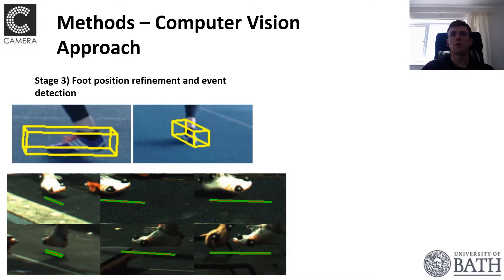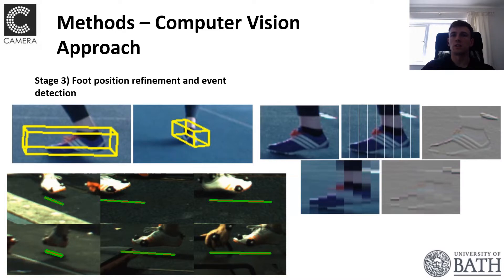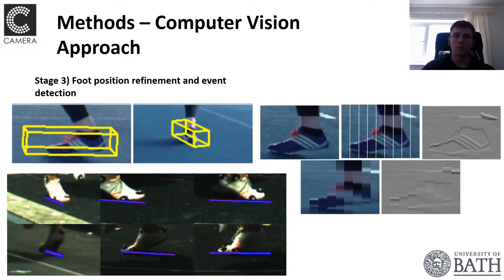3D foot localization refinement is achieved by optimizing a roughly foot-sized 3D bounding box around the foot and projecting this from 3D space back into each 2D camera view to provide multiple views of the foot contact. Splitting the foot into vertical slices and extracting color and gradient-based features from each slice allows us to track the vertical motion of the foot. Using a forwards and backwards search from the approximated mid-stance, we can determine the frame of touchdown and the frame of toe-off, with an example provided in the bottom left of the screen.